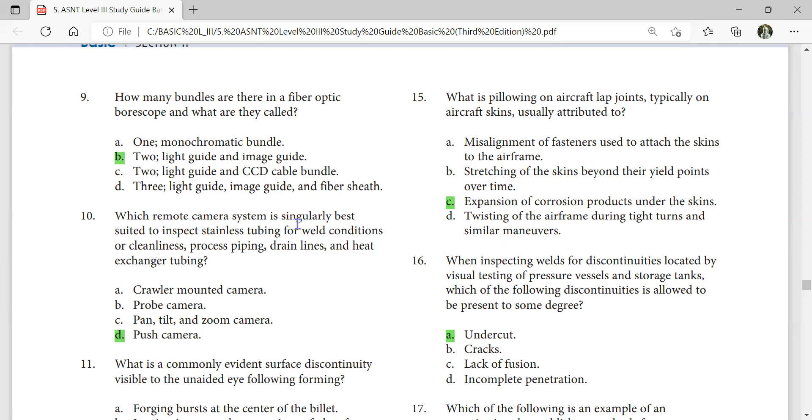Each remote camera system is singularly best suited to inspect stainless steel tubing for weld condition or clean air process piping, drain lines, and heat exchanger tubing. Boost camera.